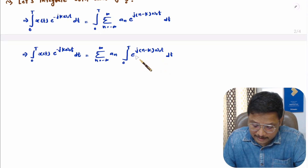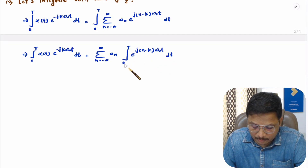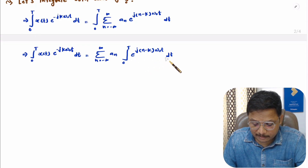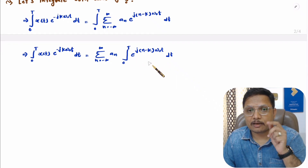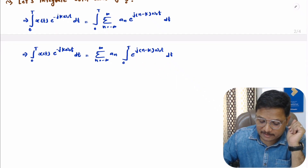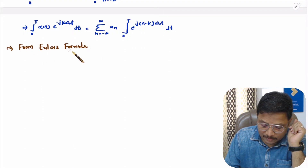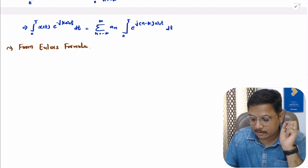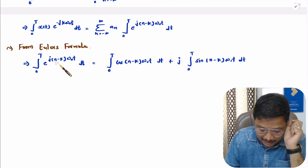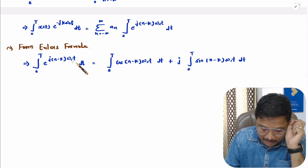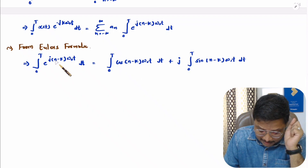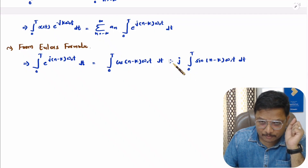Now we need to understand this integration: the integral with limit from 0 to T of e to the power j(n minus k) omega naught t dt. This can be understood based on Euler's equation. As per Euler's formula, this can be written as cos of (n minus k) omega naught t plus j sin of (n minus k) omega naught t.